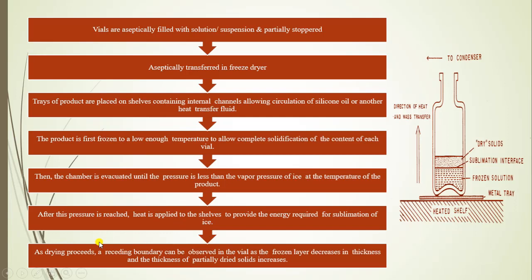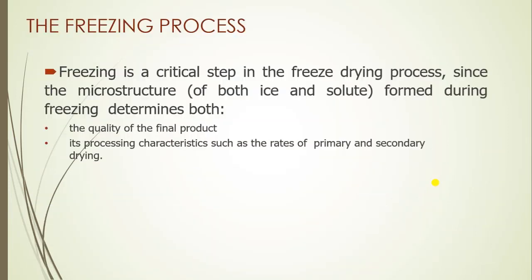Once this pressure is reached, heat is supplied to the shelf to provide the energy required for sublimation of the ice. As drying proceeds, a receding boundary can be observed in the vial as the frozen layer decreases in thickness and the thickness of the partially dried solid increases. Eventually, the preparation will be completely dry.